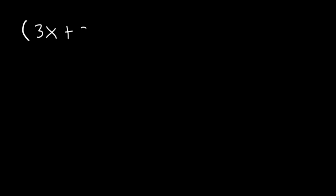In this video, we're going to focus on the FOIL method. Let's say if we wish to multiply a binomial, such as 3x plus 2, times another binomial, 2x minus 1. Well, how can we do it? We need to use something called FOIL, which stands for First, Outer, Inner, Last.